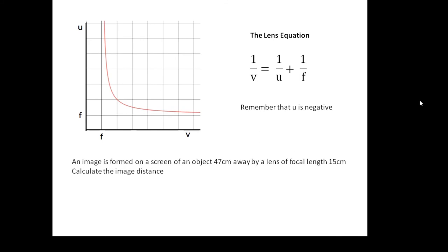I'll talk you through this example. An image is formed on a screen of an object 47 centimeters away by a lens of focal length 15 centimeters. Calculate the image distance. So what do we know? We know the focal length f, and we know the object distance is minus 47 centimeters. We're asked to find the image distance v. It's probably easier if we just leave everything in centimeters. So u is minus 47, f is 15. So 1 over v equals minus 1 over 47 plus 1 over 15. When I work this out on my calculator, I use the x to the minus 1 button quite a lot. What I would do is 1 over 15 minus 1 over 47, and then don't forget to do 1 over your answer. You should get v is 22 centimeters.